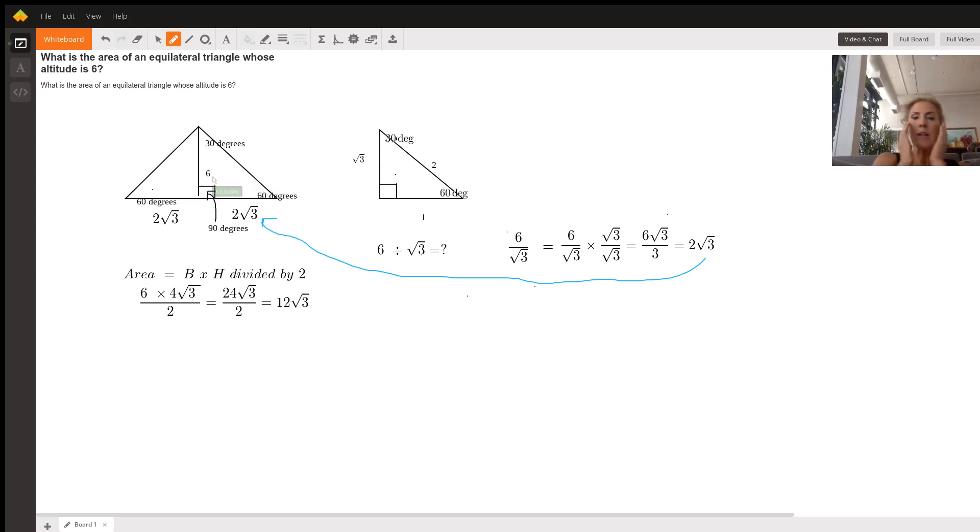So how do we figure this out? We ideally want to find this length here, right? Why is that? Because area of a triangle is base times our altitude six divided by two. So if we find half of this length and double it, we'll get the length of our base.